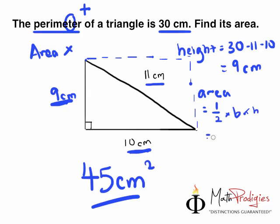In this case, the base is what? 10. So half times 10 times 9. What is 10 times 9? 90. What is half times 90? It's 45 cm squared. And that is the answer for this question. If you got it right, high five. You are a math prodigy. Good job.